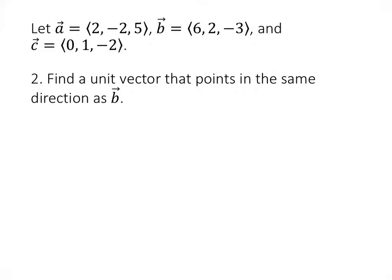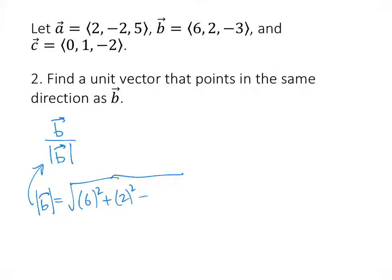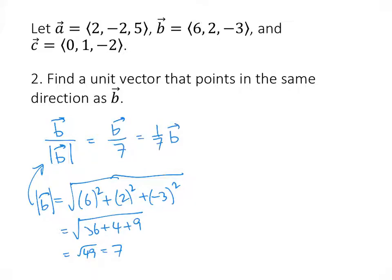For the next one, we're asked to find a unit vector that points in the same direction as vector b. Whenever we need a unit vector in a particular direction, we take that vector and divide by its magnitude. The magnitude of b is the square root of 6² + 2² + (-3)², which is √(36 + 4 + 9) = √49 = 7. So the unit vector is b divided by 7, which gives us (6/7, 2/7, -3/7).